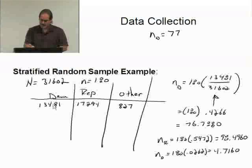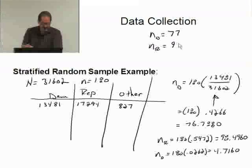N sub R, the number of Republicans I'm going to contact, see, 98.496. I'm going to round this down to simply 98. And the number of others, 4.71, that's going to go up, I'm going to end up getting 5.